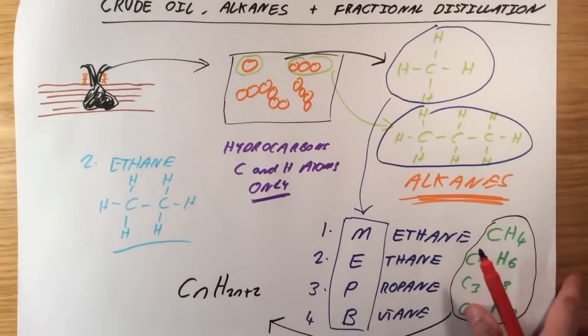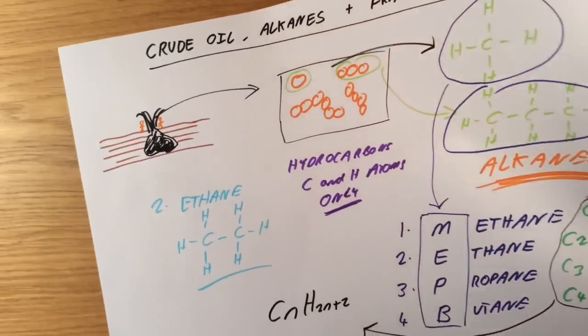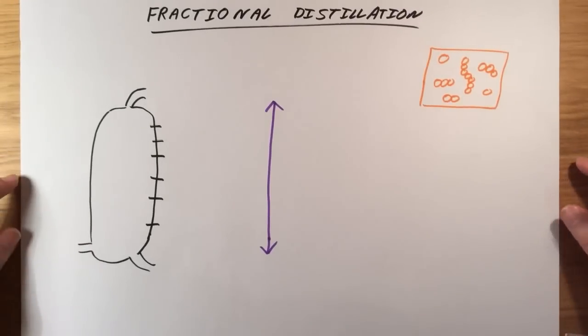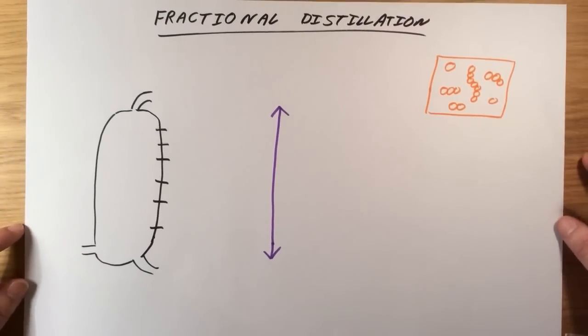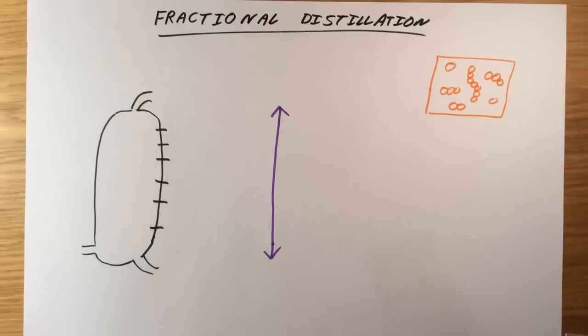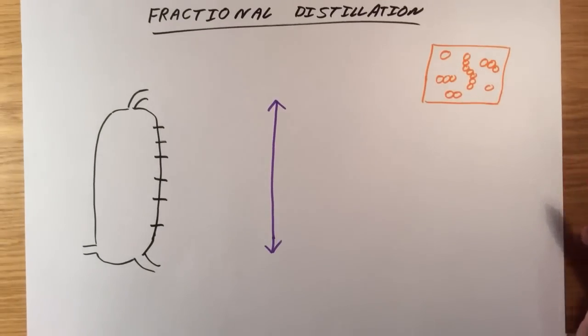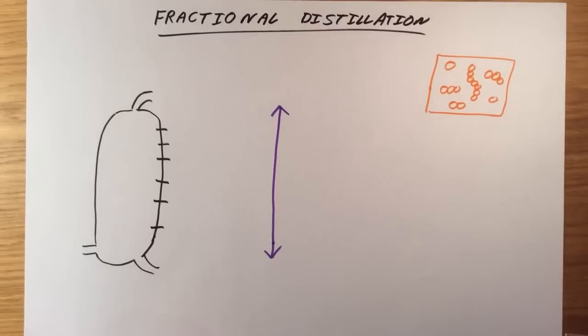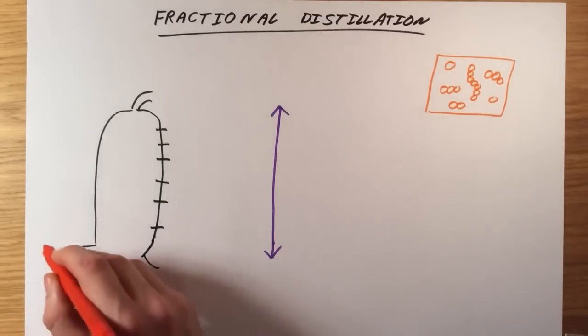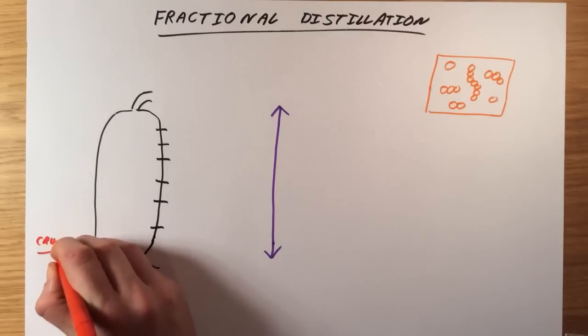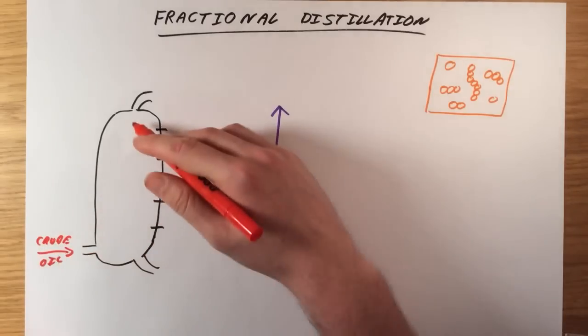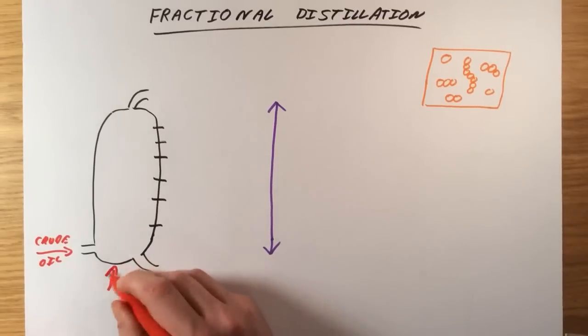So we've worked out how we can name some of these alkanes. What we need to know now is how we can separate the mixture of crude oil into different parts called fractions. Crude oil itself is extremely thick and viscous and gloopy, and it's not really very useful for anything. So we've got too much of a mixture, too many different sizes of chains in there, which makes it not useful. So we have to separate it. And to do that, we do fractional distillation. What we're going to do is we're going to add in crude oil to the bottom of our column here, which we call a fractionating column. And we need to apply heat.